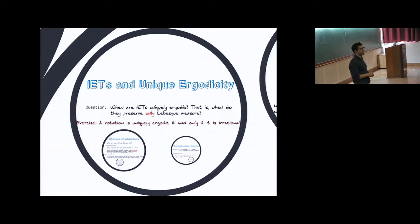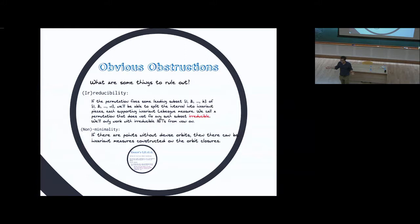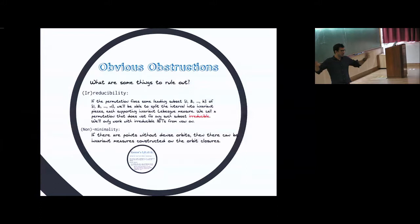The easy exercise is: a rotation — an exchange of two intervals — is uniquely ergodic if and only if it is irrational. If it's rational, you're periodic and you preserve lots and lots of measures. We should assume our IET is irreducible — that is, there's no sort of subset of 1 to k of 1 to n that your permutation fixes, no way that my piece of string was really two pieces of string, each of which I cut independently and permuted independently. Another point: if there are points with orbits that are not dense, then you could look at the closure of that orbit — there'll be a measure supported on that which will not be Lebesgue. That's an obvious obstruction.